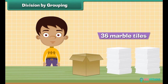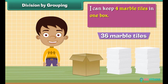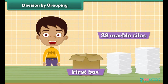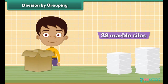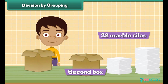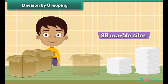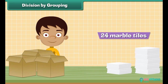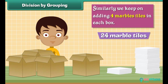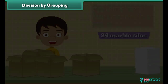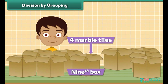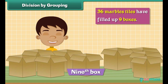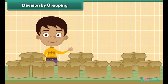Division by grouping: I have thirty-six marble tiles. I can keep four marble tiles in one box — how many boxes do I need? Four marbles in the first box; thirty-two marble tiles are left. Four marble tiles in the second box; now twenty-eight are left. Four more in the third box; now twenty-four are left. We keep adding four marble tiles to each box until the ninth box, where the last four marble tiles are kept. Thirty-six marble tiles have filled nine boxes — thirty-six marble tiles put into equal groups of four need nine boxes.